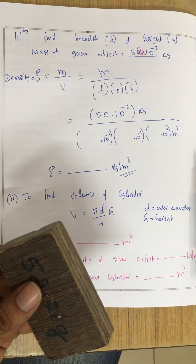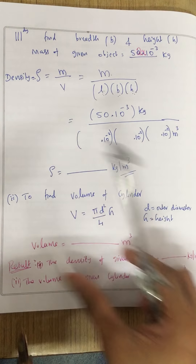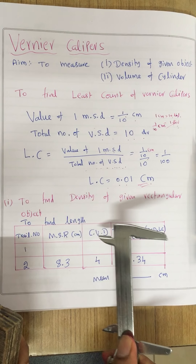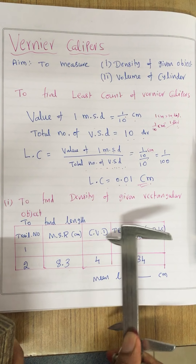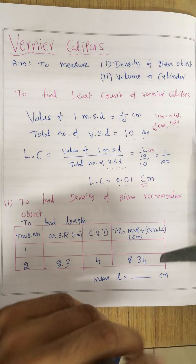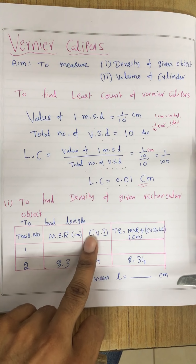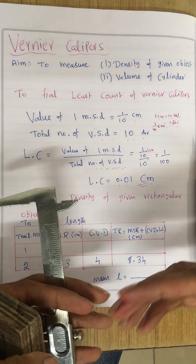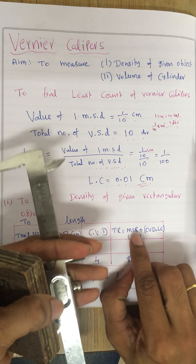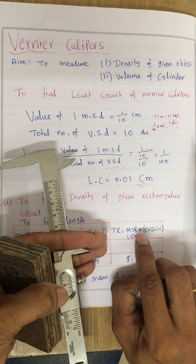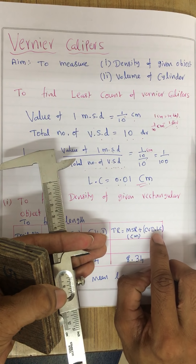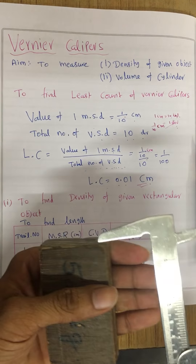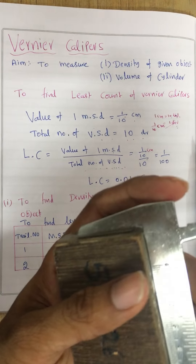The first thing I am going to do is find out the length. You have got main scale reading and coinciding vernier division. For the main scale reading, I have to look at the main scale, and for the coinciding vernier division, I have to look at the vernier scale. There is a formula to find out the total reading: MSR plus CVD multiplied by least count. So you first multiply CVD with the least count, then add up with the MSR. So we will do it — let us find out what is the length.